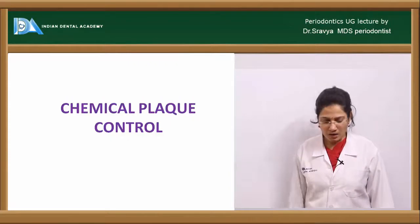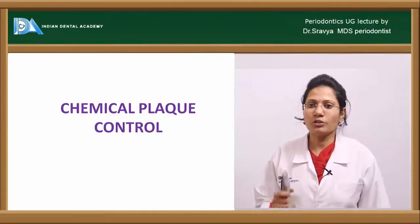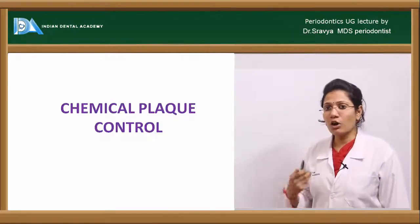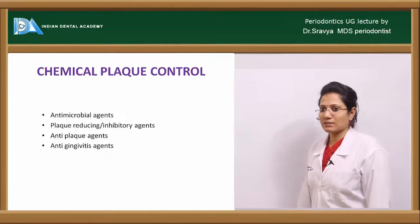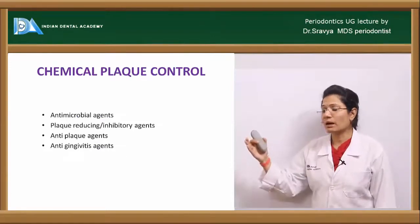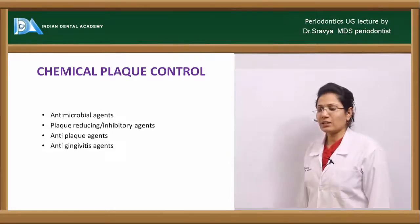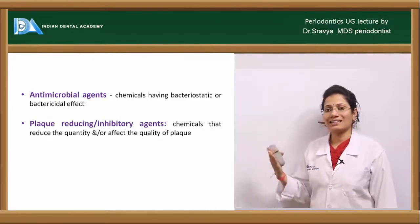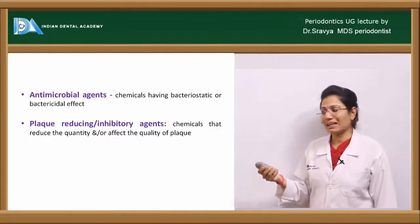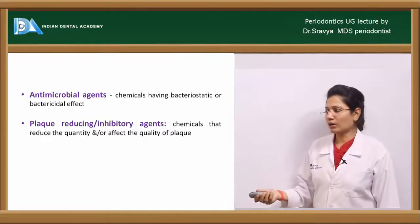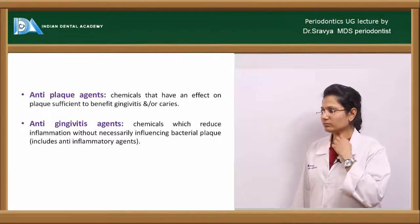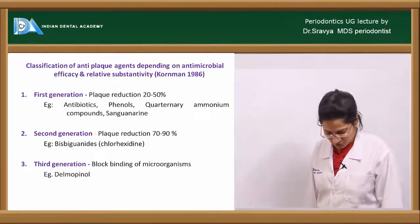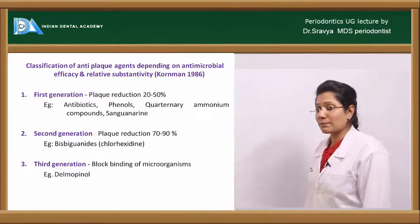That finishes mechanical plaque control. The second part is chemical plaque control, which is the adjunctive use of certain chemicals to control the formation and disrupt already-formed plaque. Chemical plaque control agents can be classified as antimicrobial agents, plaque-reducing or plaque-inhibitory agents, anti-plaque agents, and anti-gingivitis agents. They can also be classified as first, second, or third generation based on antimicrobial efficacy and relative substantivity.